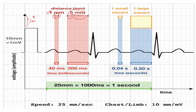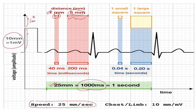If you read the standardization, the speed is 25 mm per second, and the height — 10 mm is equal to 1 millivolt. That means two large boxes are 10 mm, which equals 1 millivolt, and the speed is 25 mm per second. That means 25 millimeters is equal to 1 second, which is 1000 milliseconds.